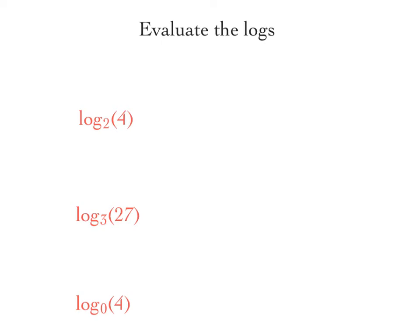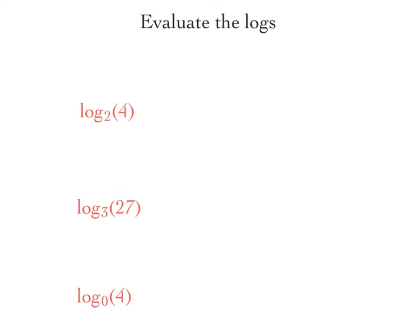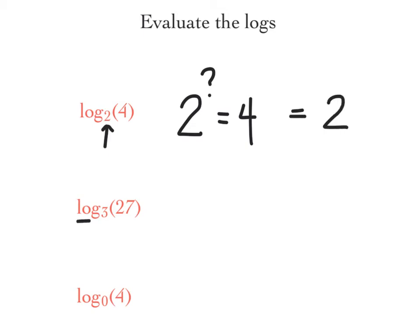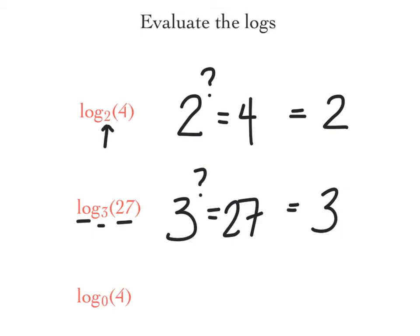So now we're going to evaluate these logs without a calculator, and it's simple. Every time you see log, remember you're just saying 'what power.' So I'm saying what power of 2 is 4? What power of 2 is 4? And I know that answer is 2. Log base 3 of 27 — so I'm saying what power of 3 is 27? And hopefully we know that answer right away is 3. So I think if you write it in this notation, the logs are very simple.